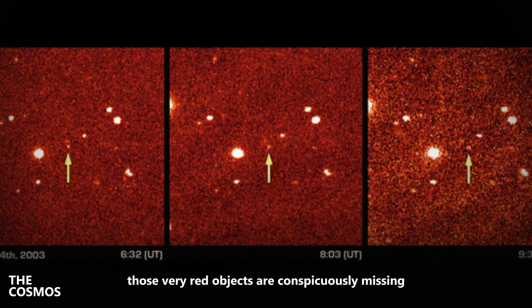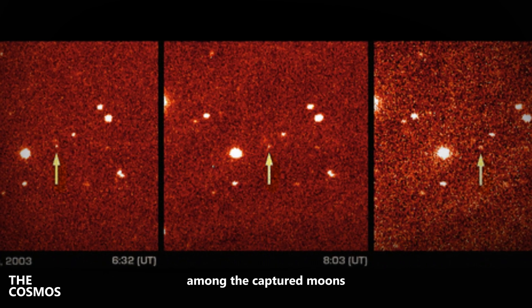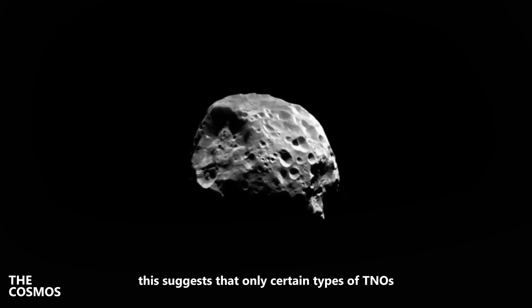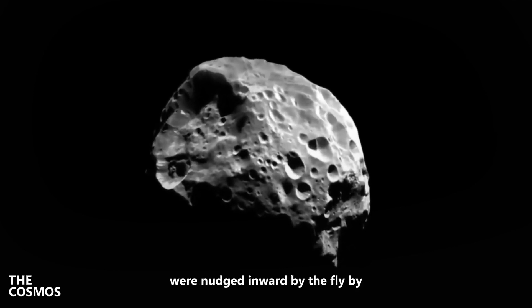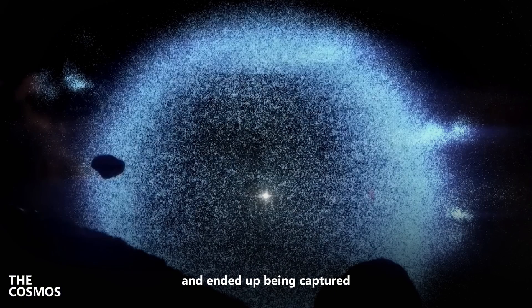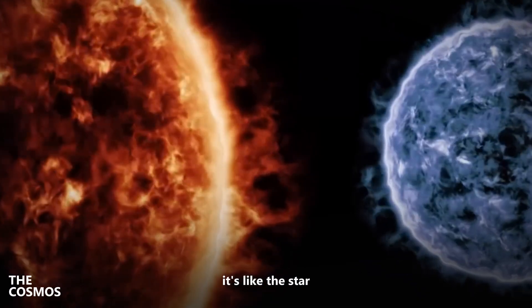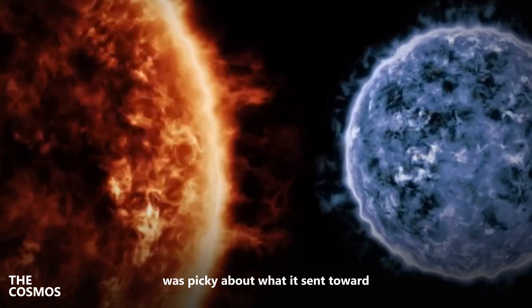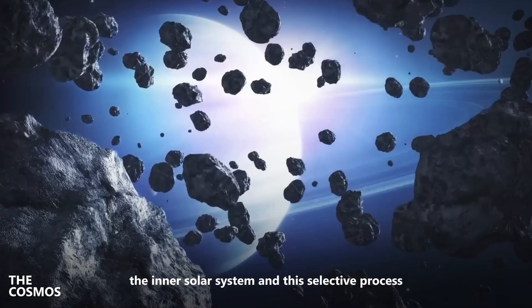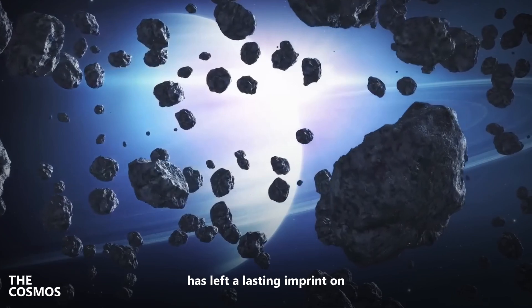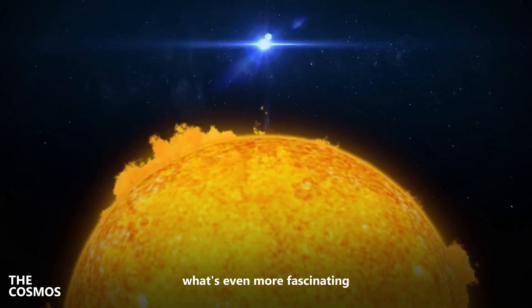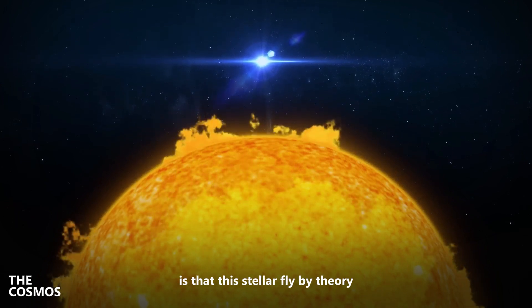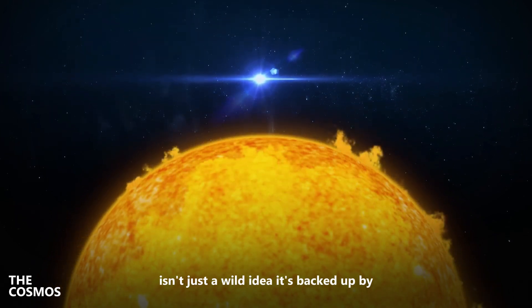Those very red objects are conspicuously missing among the captured moons. This suggests that only certain types of TNOs were nudged inward by the flyby and ended up being captured, while others were left out in the cold. It's like the star was picky about what it sent toward the inner solar system, and this selective process has left a lasting imprint on the appearance of the irregular moons.